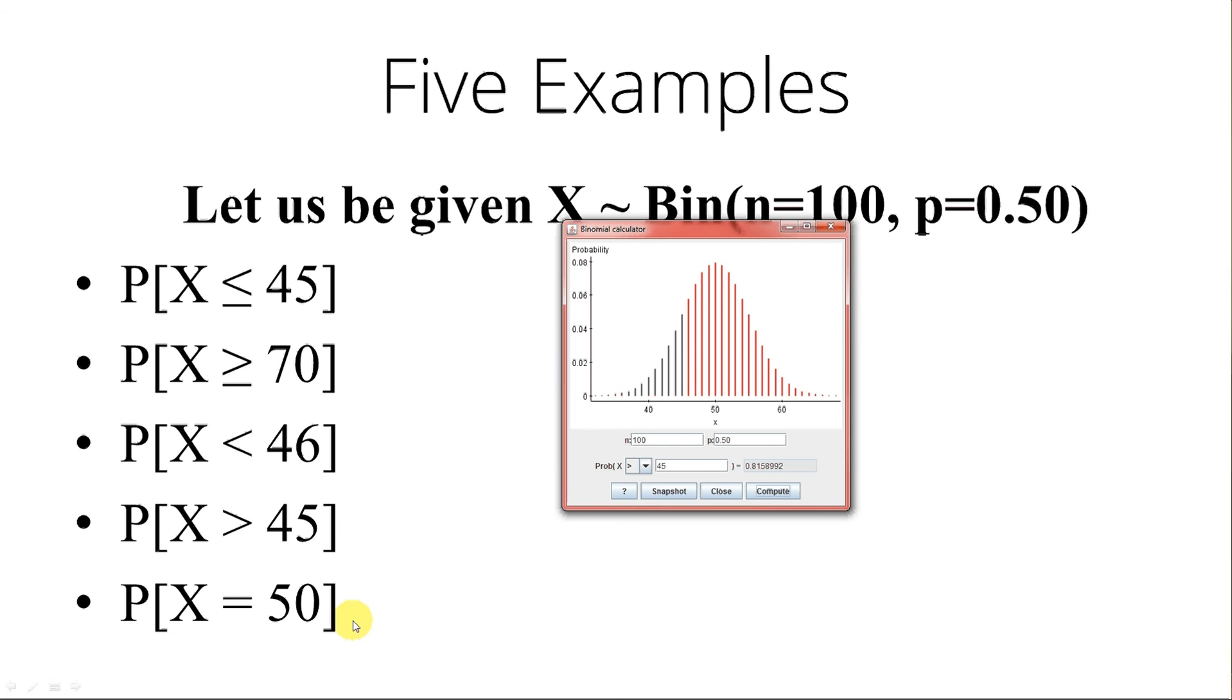Finally, let's try the probability of getting exactly 50 heads. Now we know that the expected value of X is 50, n times p. But what's the probability of actually getting exactly 50 heads? Change the 45 to 50. Change the direction to equals. Compute. Notice only the 50 bar is red. The probability is 0.07958924. So about 8% chance of getting exactly 50 heads.